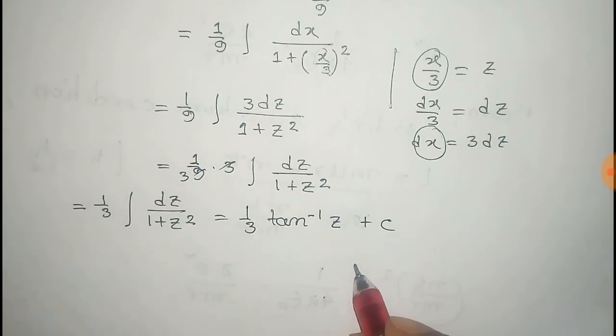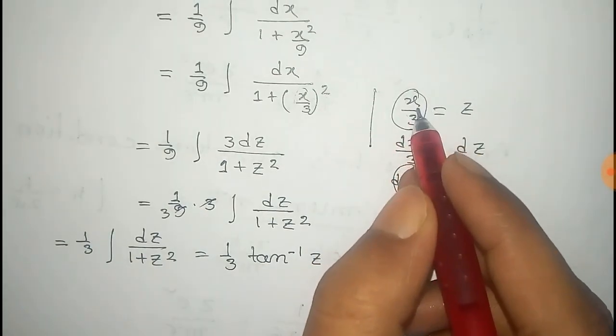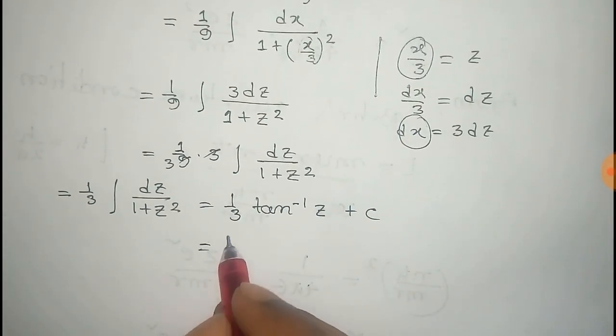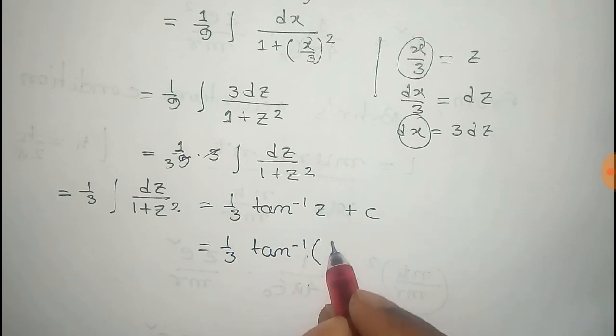Now we put the value of z that we considered before. So that is x by 3. So put this there. So it becomes 1 third tan inverse of x by 3 plus c.